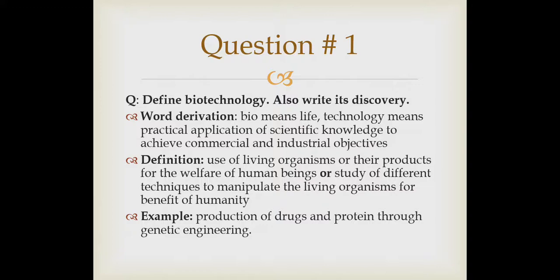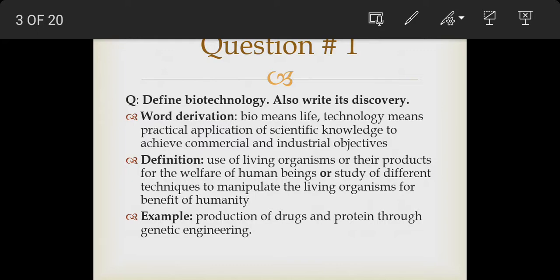It is the use of living organisms or their products for the welfare of human beings, or it is the study of different techniques by which we can manipulate living organisms for the benefit of humanity — by which we can modify the genes of an organism. One such example is the production of insulin; we can produce insulin with the help of biotechnology by modifying the genes of a bacterium so that it can produce insulin. Similarly, growth hormones can be produced with the help of biotechnology or genetic engineering.